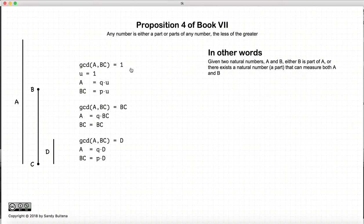So, here we have it summed up. If the greatest common divisor between A and BC is one, then A is measured by U. BC is also measured by U, and therefore, BC is composed of parts. Of course, if the greatest common divisor is equal to BC, then BC measures A, and BC is simply a part of A.